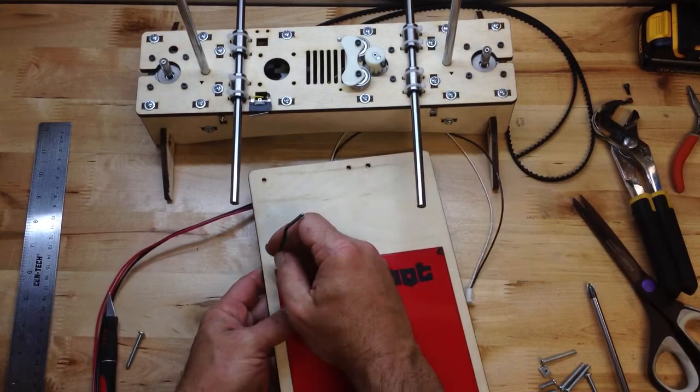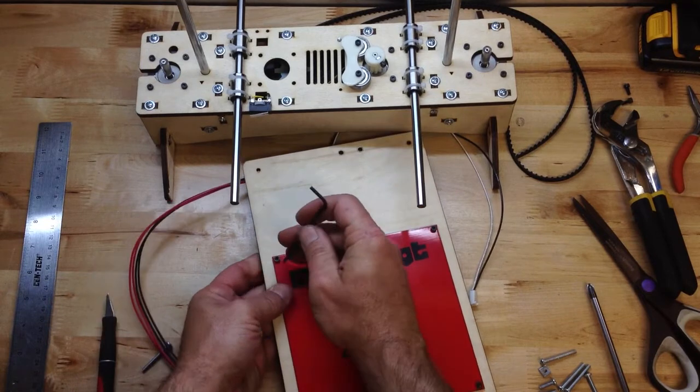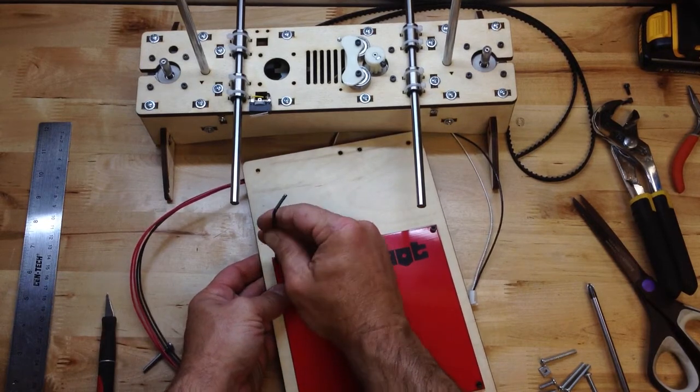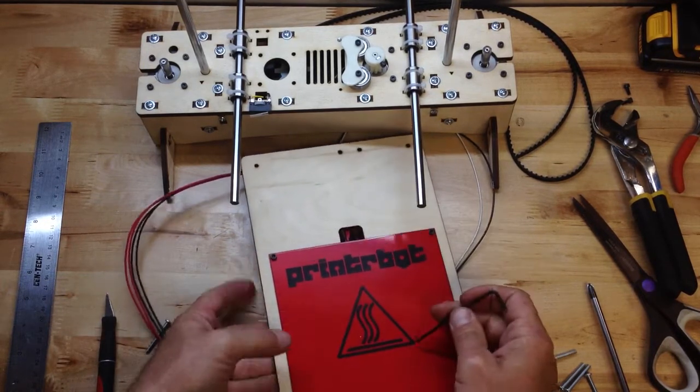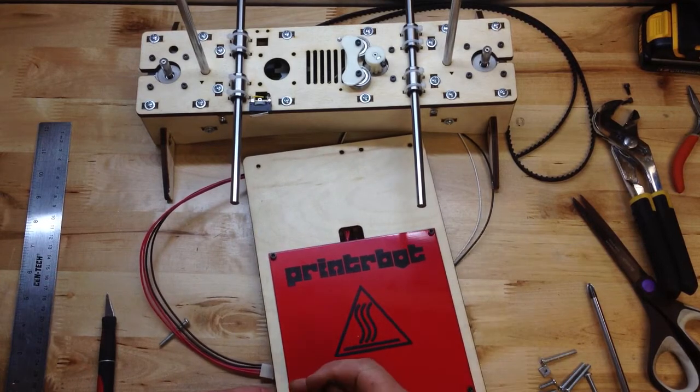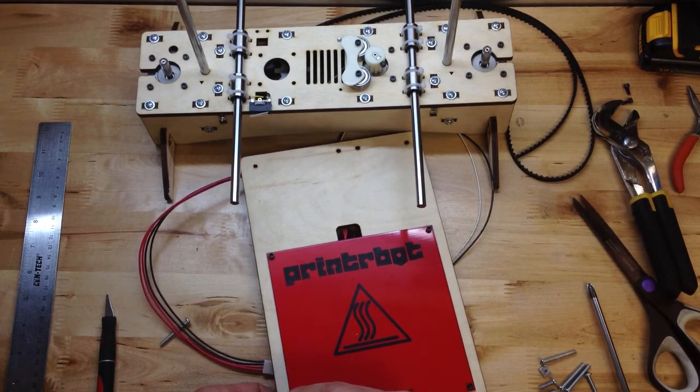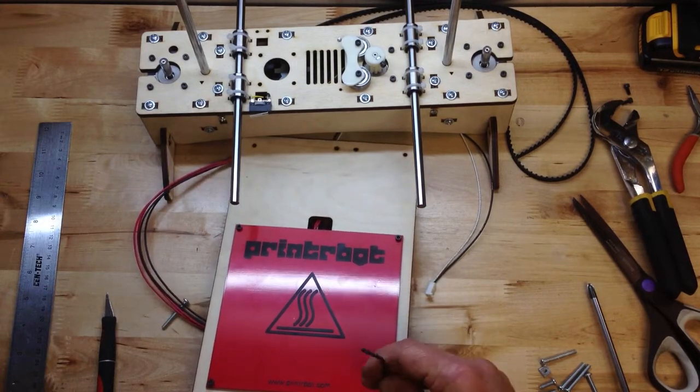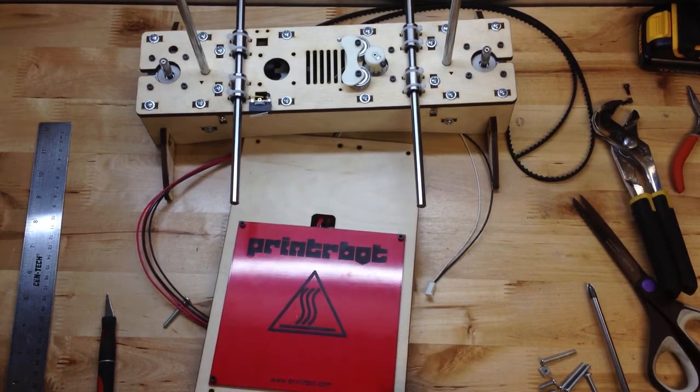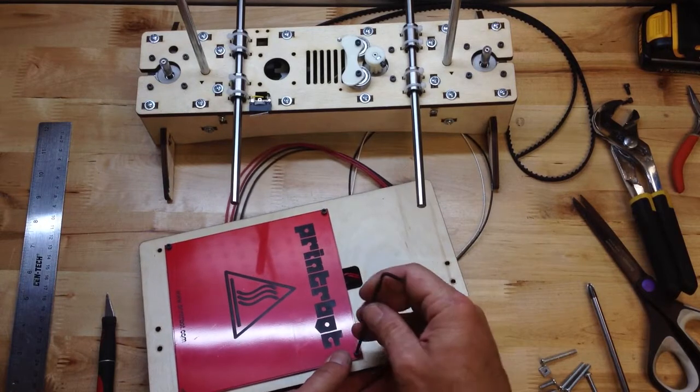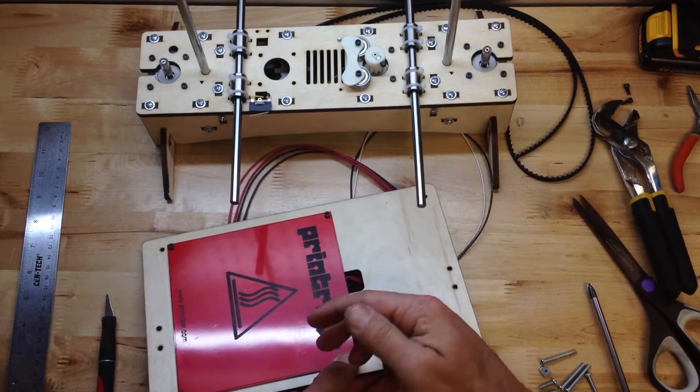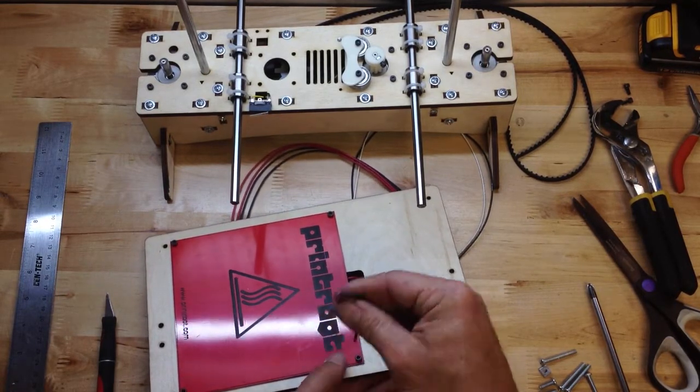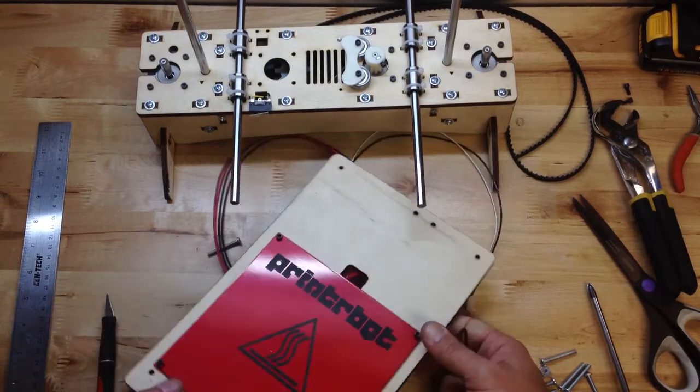So now some people will put glass on the top. If you put glass on here, just take this down to Home Depot or Lowe's and say I need a piece of glass exactly this size. You won't even need these M3 screws. What you'll want to do is figure out another way to hold the glass down.